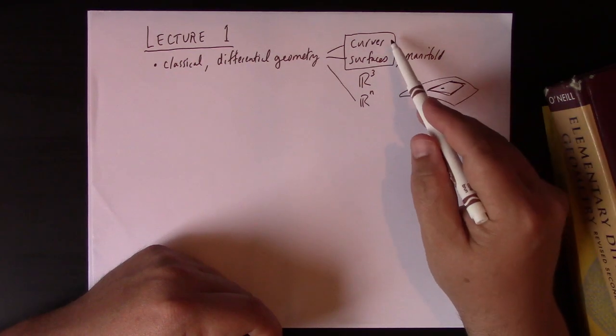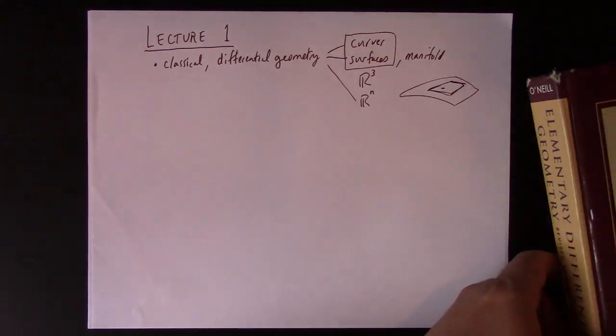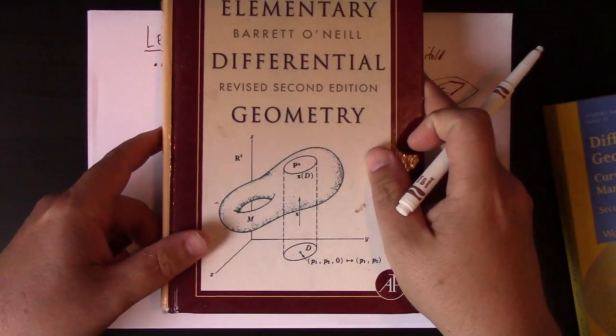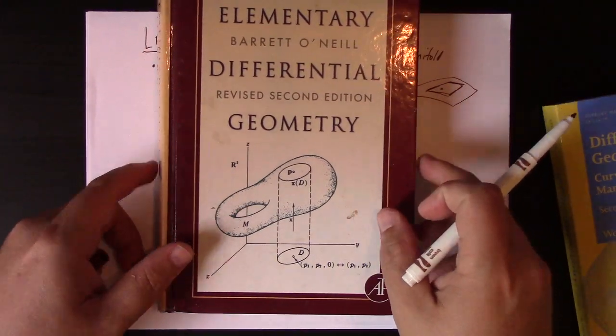So that's kind of where we're going. Curves, it's about the Frénet–Serret equations and the surfaces. We'll be following, oh yes, so what books we're using. We're using Elementary Differential Geometry by Barrett O'Neill. It's a great classic book. This is the revised second edition.